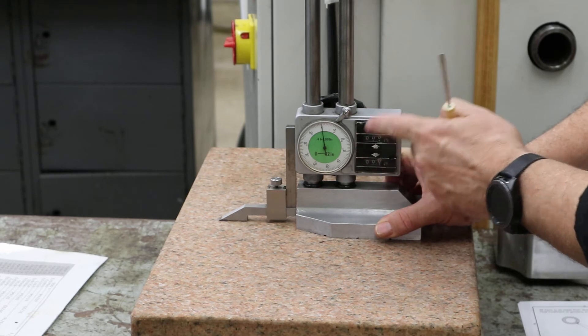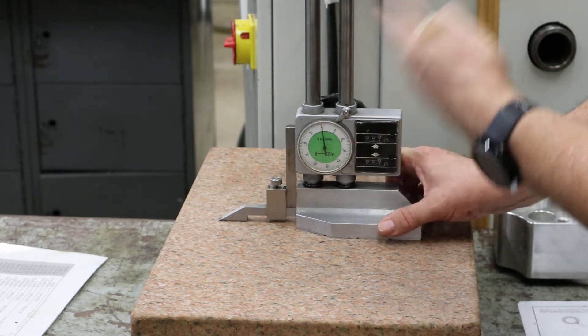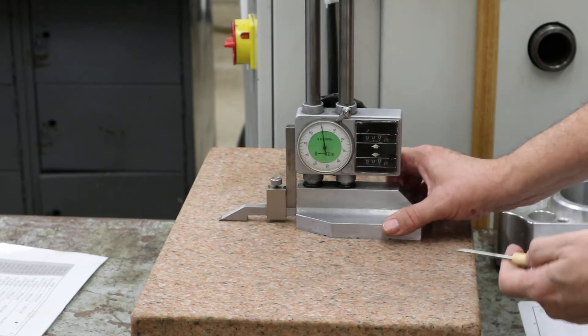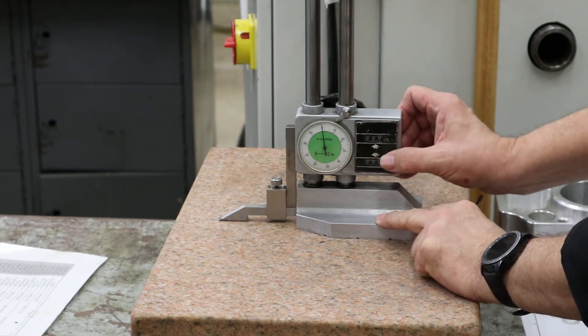And these are counters. They count revolutions, hundred thousandths. So zero, one full revolution is a hundred thousandths, just like our dial calipers. So I set zero.